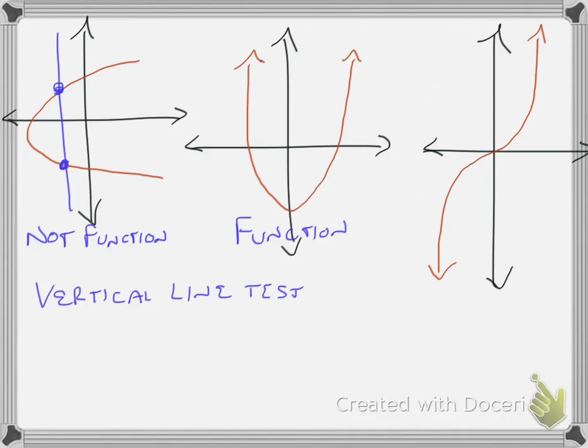But, in order to tell, hold on, we use the vertical line test to tell whether it's a function or not. We can use the horizontal line test to tell whether it's one-to-one. If it passes both, then it's one-to-one.